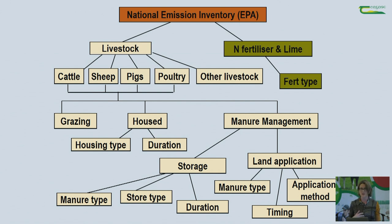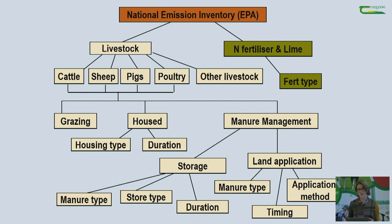On the livestock side you have your animal type, grazing versus housed, housing type, housing duration, manure management, slurry type, storage length and store type. The EPA draws on data from the National Farm Survey, AIMS in terms of animal numbers and fertilizer use. On the fertilizer side you have the quantity and type of fertilizer used — it's considerably more straightforward than the livestock piece.